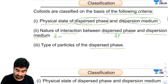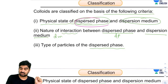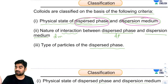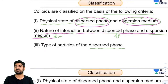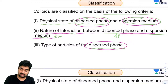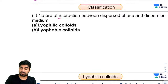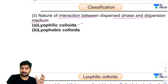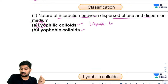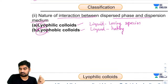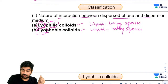The second classification is based on the nature of interaction between dispersed phase and dispersion medium. Colloids are of two types: lyophilic and lyophobic. Lyophilic means liquid-loving species; lyophobic means liquid-hating species.